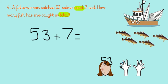Let's put 53 on our heads. Let's count seven on. Here we go: 53, 54, 55, 56, 57, 58, 59, 60. Let's just check: 1, 2, 3, 4, 5, 6, 7. So 53 and 7 makes 60. The fisherwoman caught 60 fish all together.